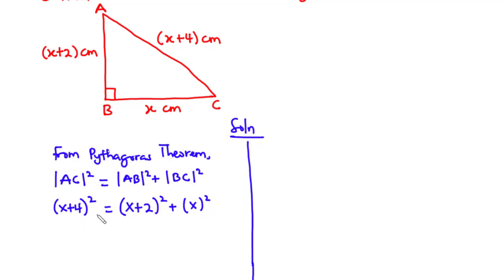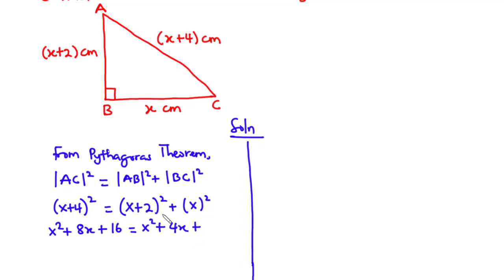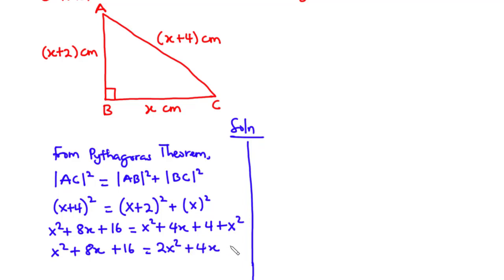Now let's simplify. (x + 4)² expands to x² + 8x + 16, and that equals (x + 2)² + x², which expands to x² + 4x + 4 + x². So we have x² + 8x + 16 = 2x² + 4x + 4.